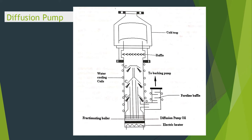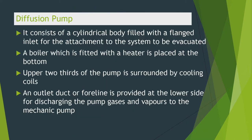This is the overall figure of a diffusion pump. It consists of a cylindrical body with a flanged inlet for attachment to the system to be evacuated. A boiler fitted with a heater is placed at the bottom. The upper two-thirds of the pump is surrounded by cooling coils. An outlet or fore line is provided at the lower side for discharging pump gases and vapors to the mechanical pump.